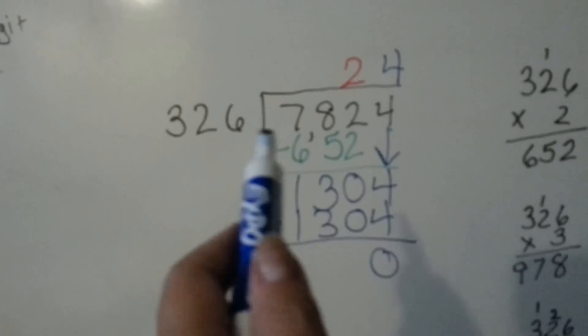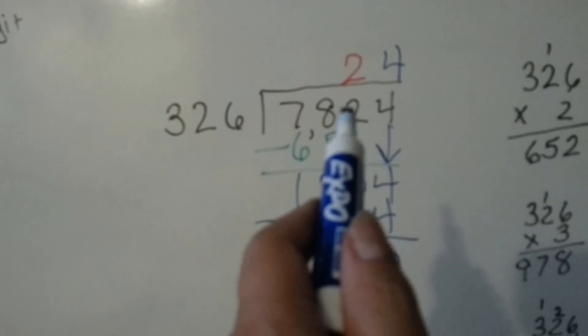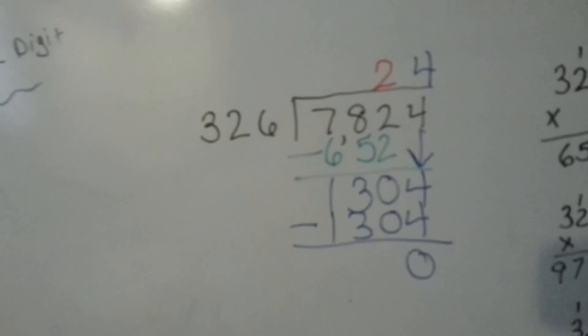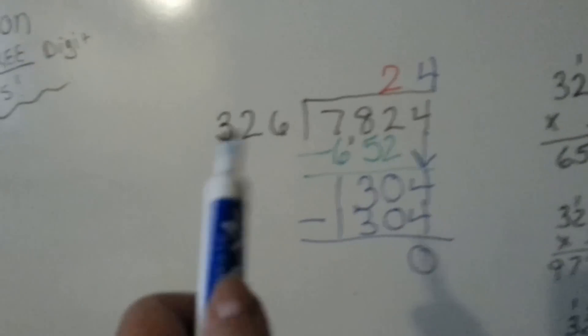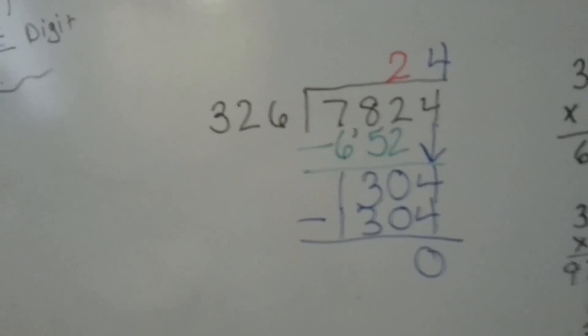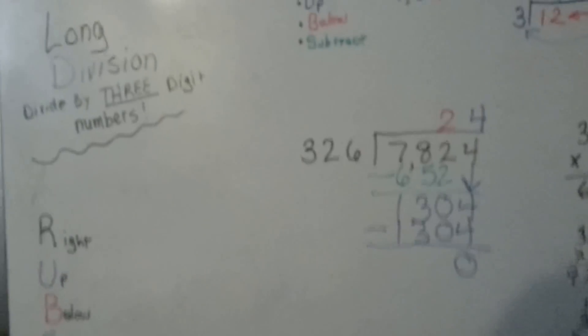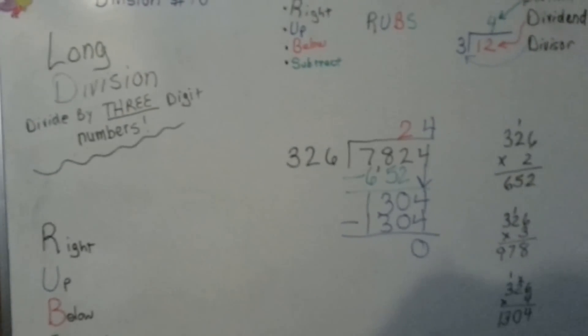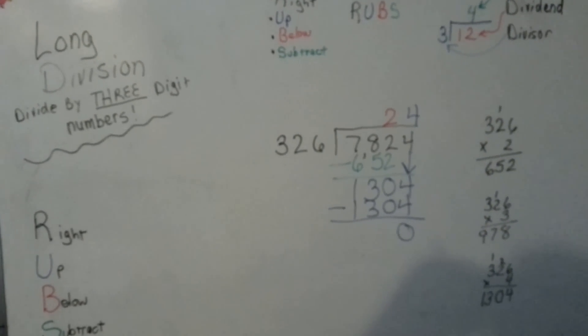Now there is a way to do long division if this number is smaller, but we'll get into that in the future. For right now, you just worry about can this number fit into this number and how many times. That's how you do long division with 3 digit numbers as the divisor.